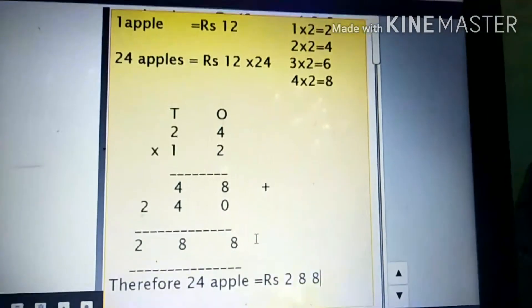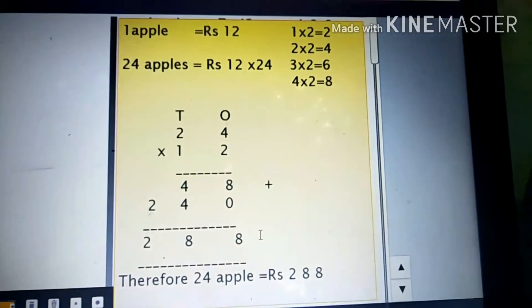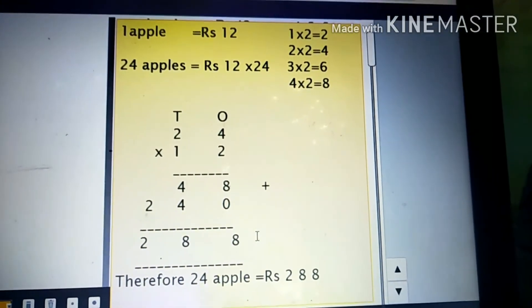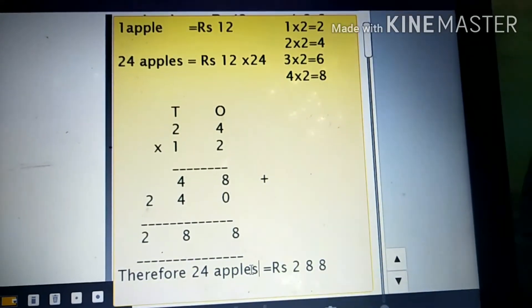Therefore, twenty-four apples is equal to rupees two hundred and eighty-eight.